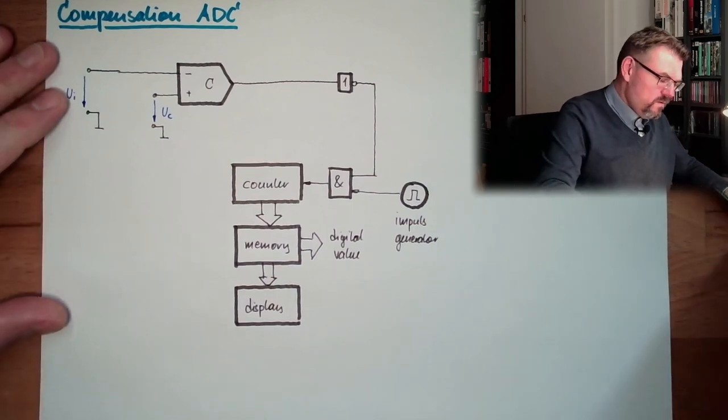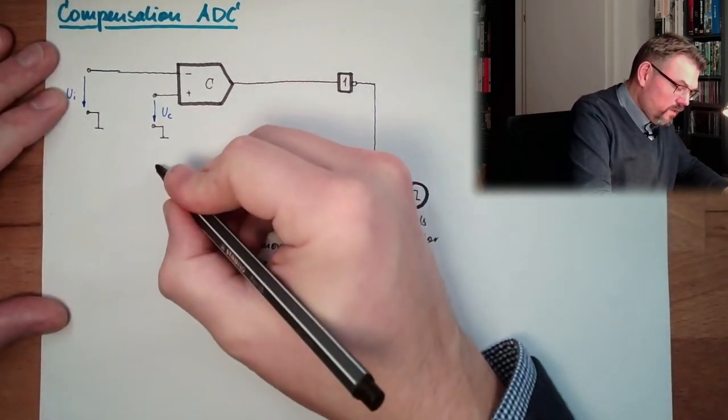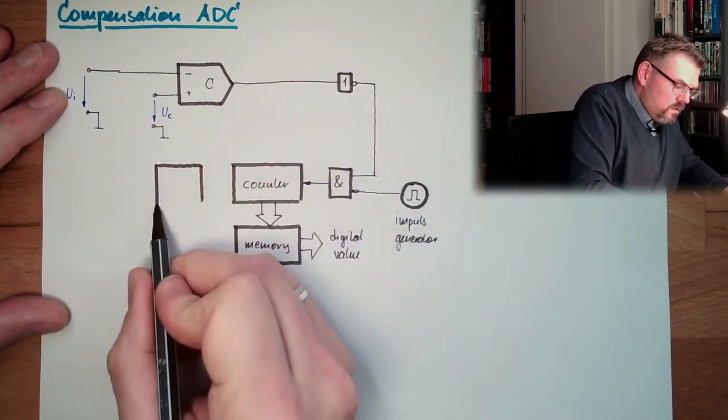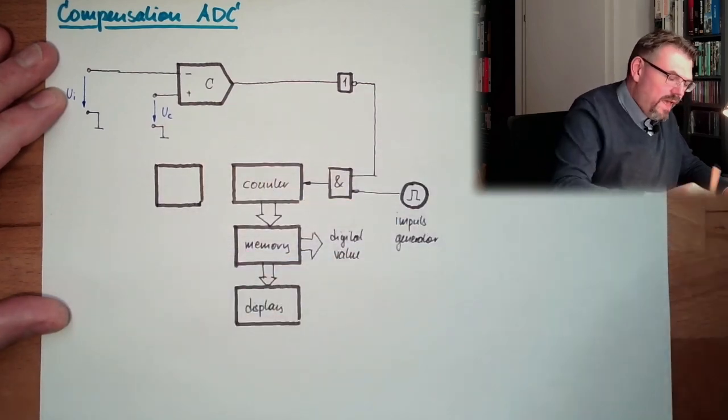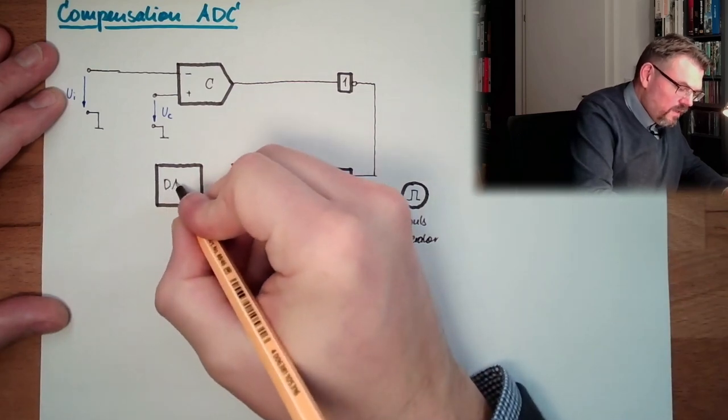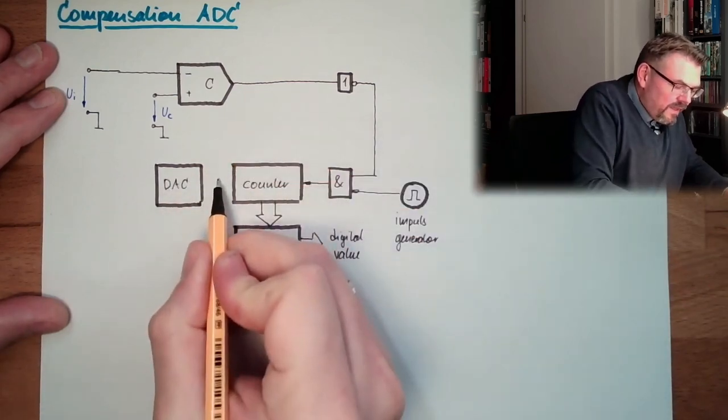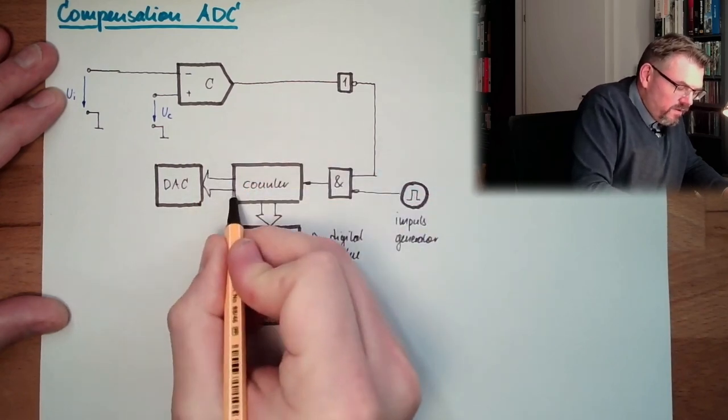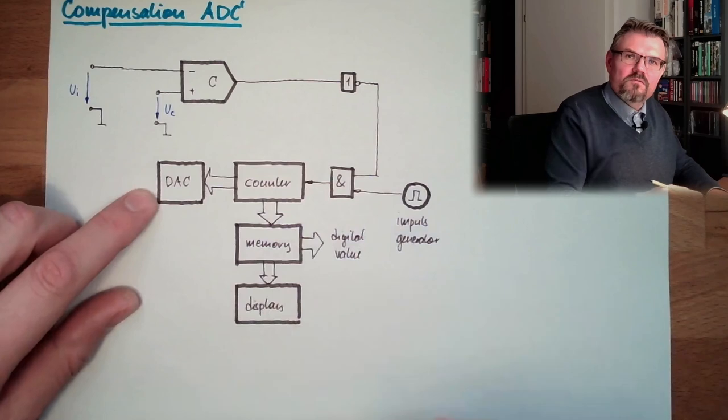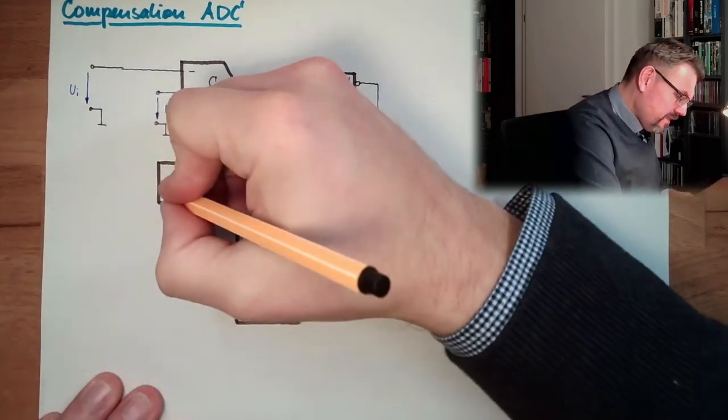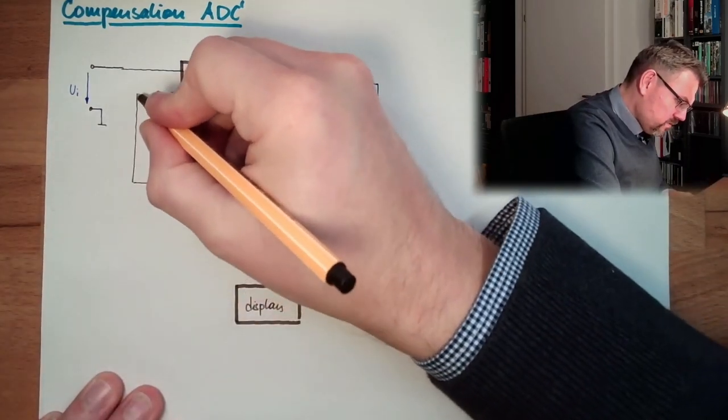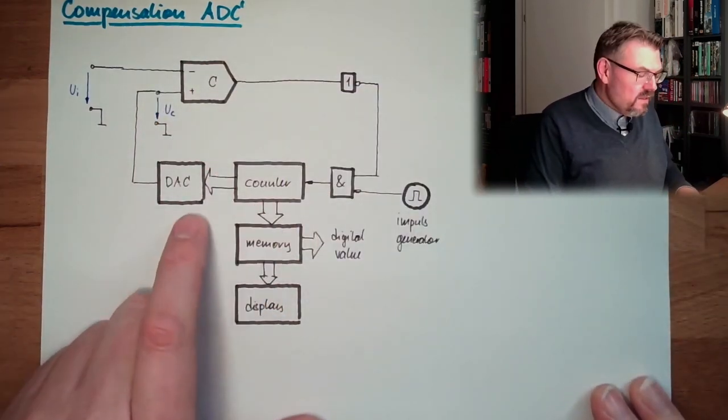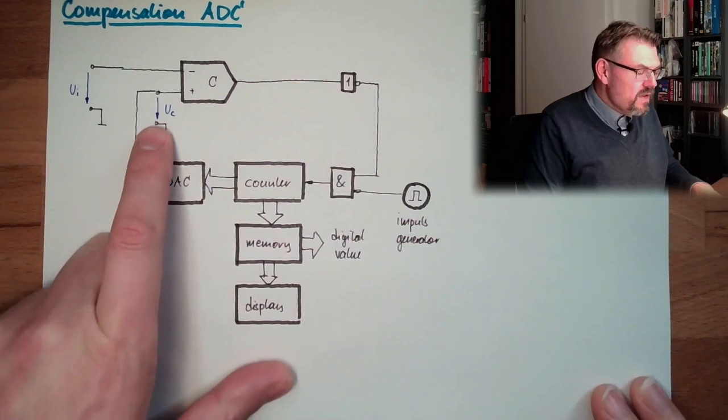Here, actually what we do is, we are using a digital analog converter taking the current counter value. Here, if the current counter value is low, the digital analog converter will have low output. And this is exactly our comparison voltage. So we're counting up until our DAC has a bigger output than the input.